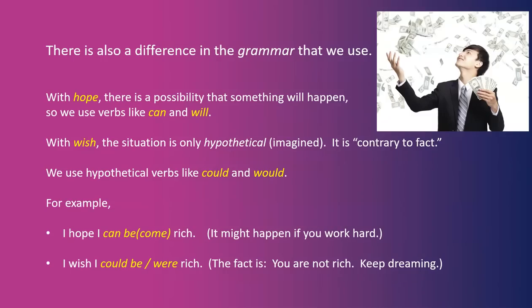There is also a difference in the grammar that we use. With hope, there is a possibility that something will happen, so we use verbs like can and will. With wish, the situation is only hypothetical or imagined — it is contrary to fact — and we use hypothetical verbs like could and would. For example: I hope I can be rich, or I hope I can become rich — it might happen if you work hard. I wish I could be rich, or I wish I were rich — the fact is, you are not rich. Keep dreaming.